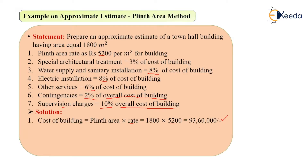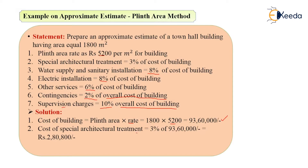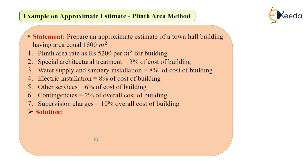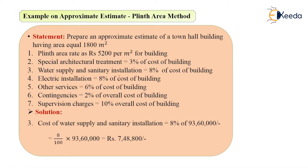This is the cost of building, but it is excluding services — that is special architectural treatment, water supply, electrical, and other services. Next is the cost of special architectural treatment. It is given as 3% of 93,60,000, which comes as 2,80,800 rupees. Now the next term is water supply and sanitary installation charges — given as 8% of cost of building, so 8% of 93,60,000 comes as 7,48,800 rupees.